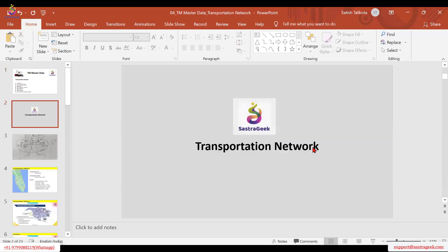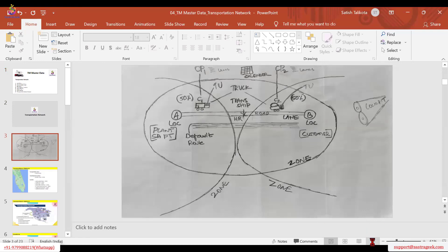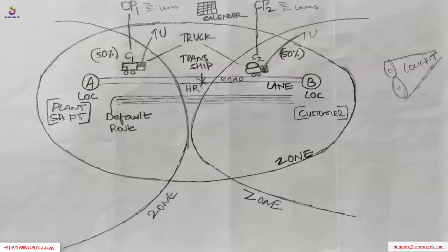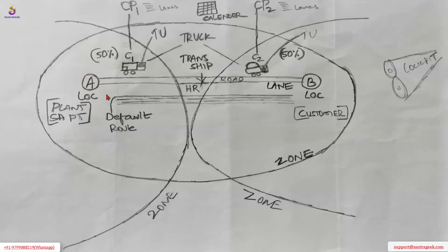Looking at this as a layman's understanding, this diagram covers all elements of transportation management master data. You have various zones in transportation management master data — there is something called a transportation zone, and zones may overlap each other sometimes. There could also be certain locations — a source location and a destination location.